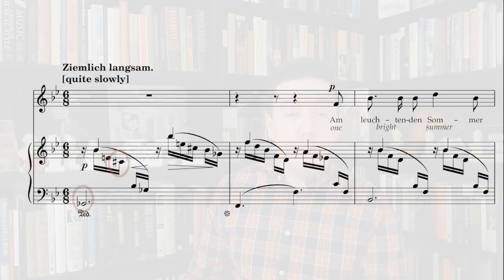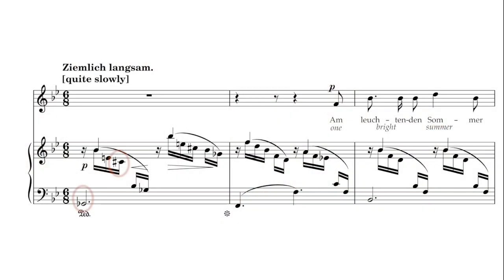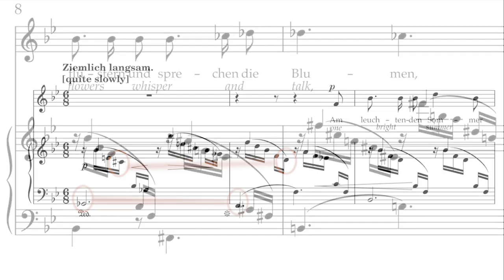First question: why did Schumann choose to mix flats and sharps like this? One theory is to go hunting for context clues, like C sharps and flats colliding in the first measure. You can speculate that this might somehow be connected. Sharps are designed to resolve up and flats are designed to resolve down — and sure enough, the accidentals in the opening augmented sixth do just that. But this doesn't explain why Schumann mixed them up here.